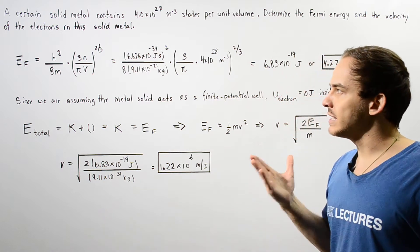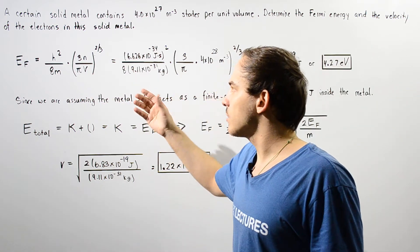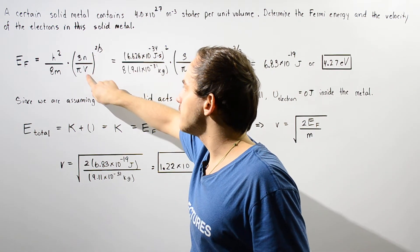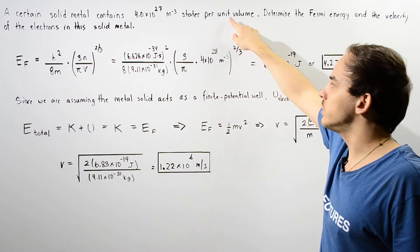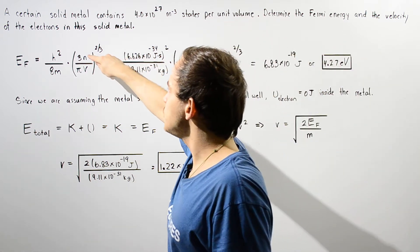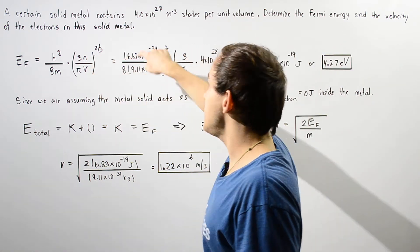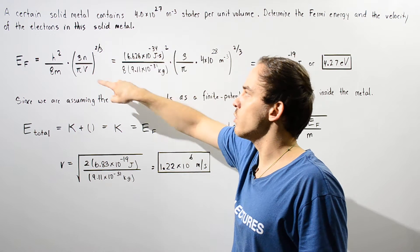This ratio of n divided by v is this quantity where n is the number of quantum states and v is our volume. Let's plug in our quantities, plug that into the calculator.